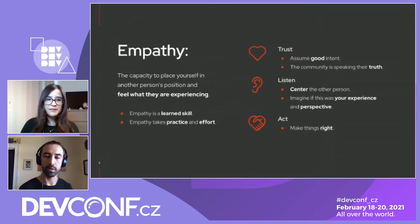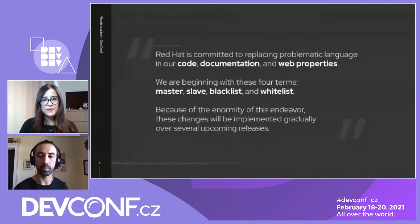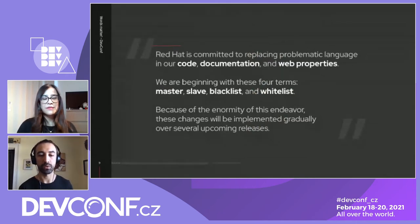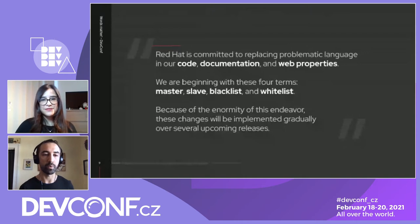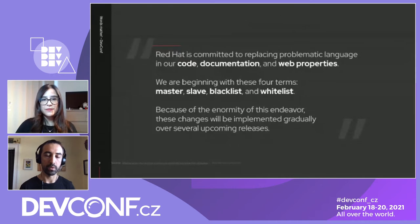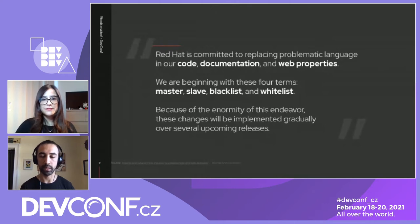We're talking about going through our code, our documentation, and our web properties, and replacing this problematic language. This was a statement that Red Hat announced — we're just using Red Hat as a very good example of an organization taking a stance against this language. The four words we're talking about are master, slave, blacklist, and whitelist. The company also recognized that it's going to be a big effort, so it will happen over time.